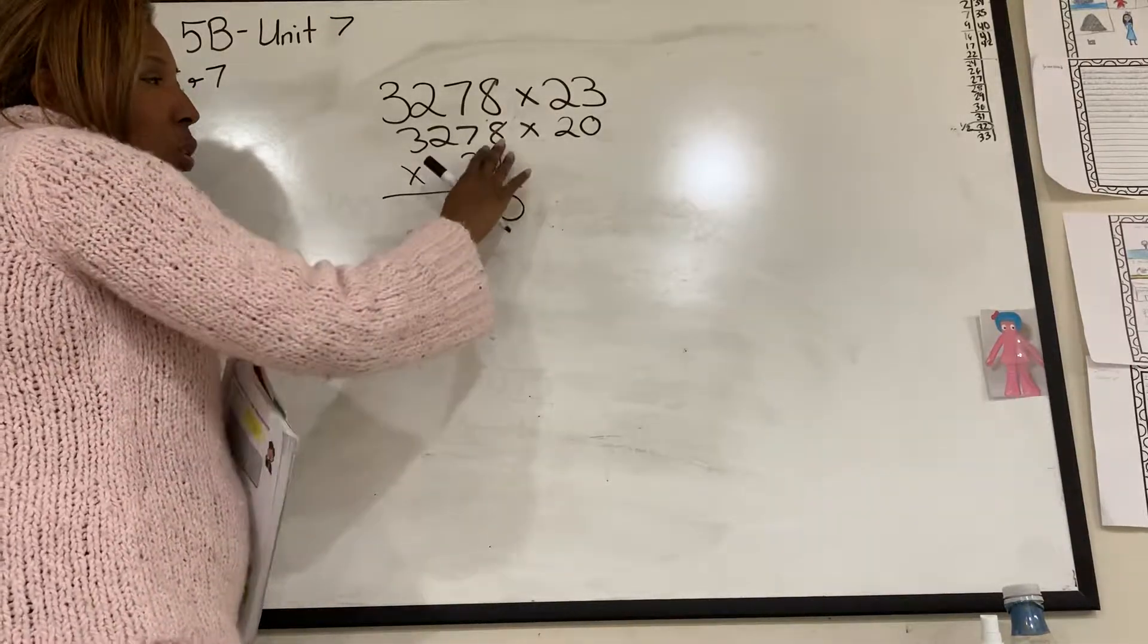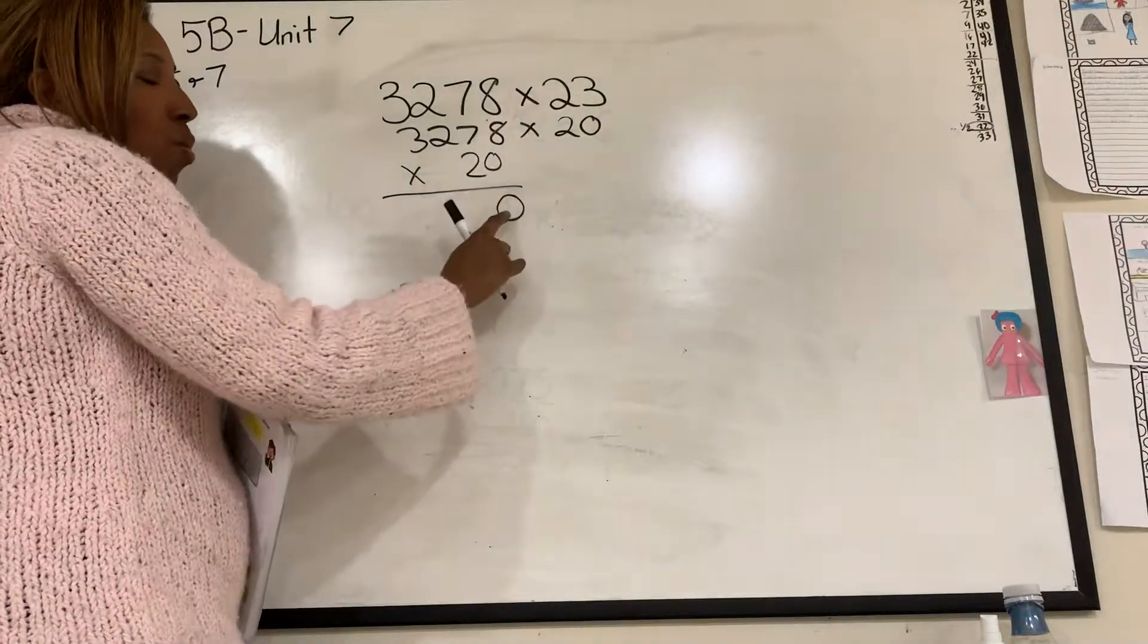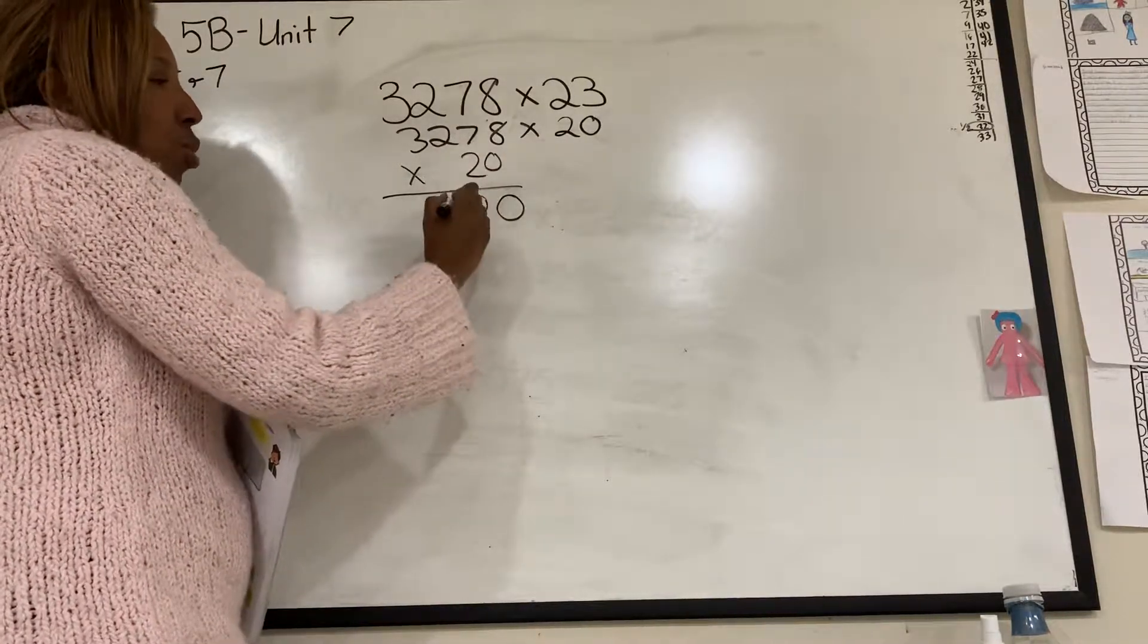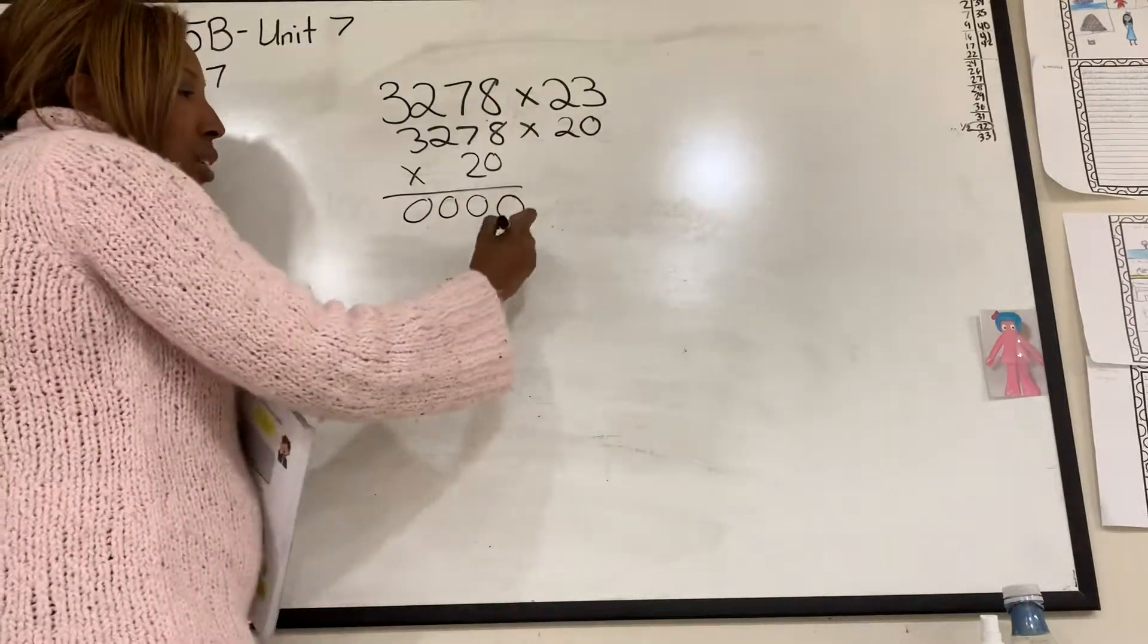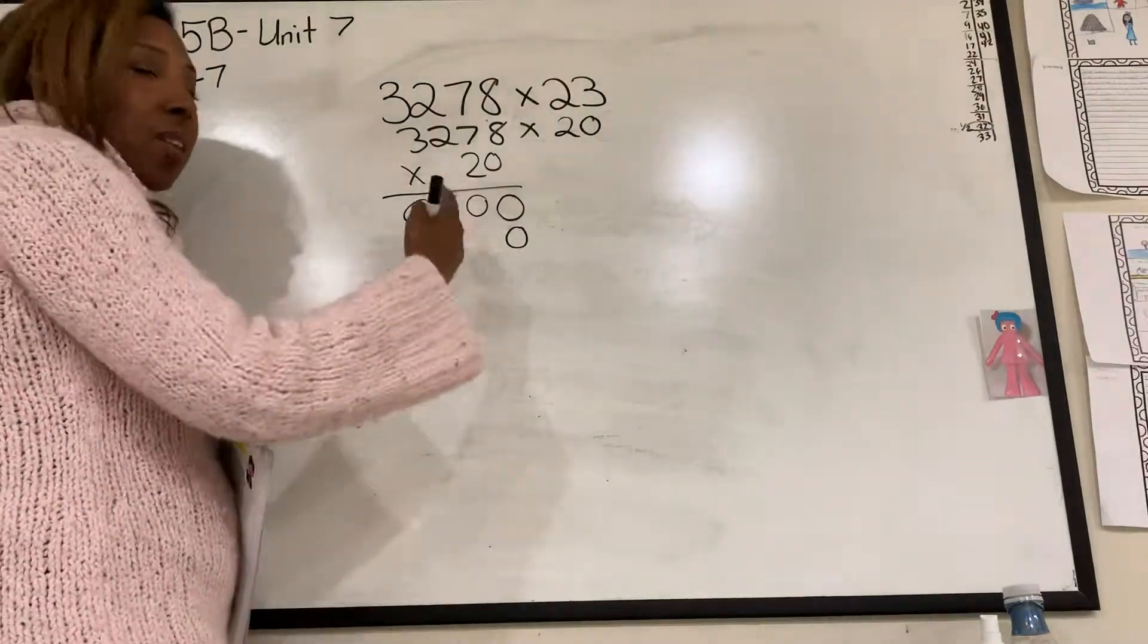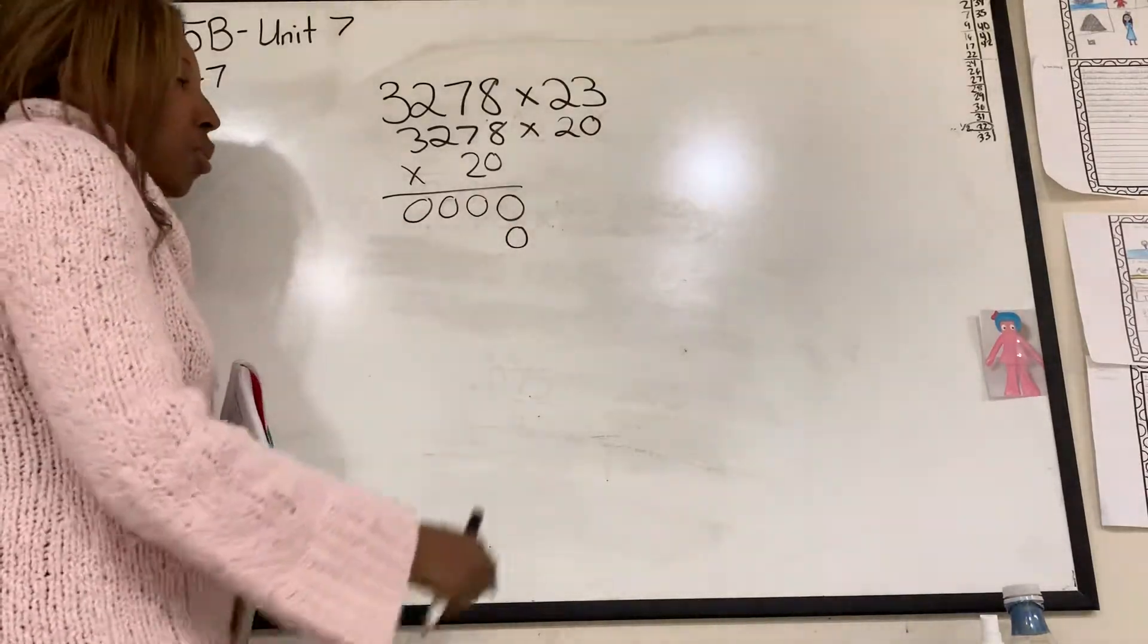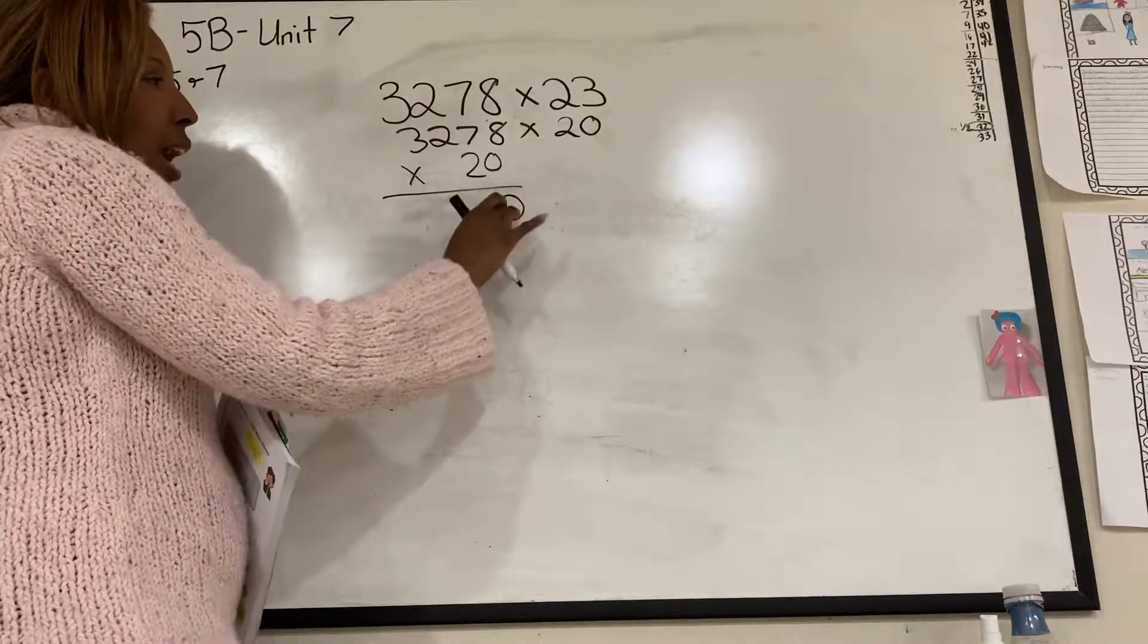And remember that 0 thing? Put the 0 down. It holds the place. You don't have to do anything. The reason I'm doing this is it wastes time to go like this. 0 times 8 is 0. 0 times 7 is 0. 0 times 2 is 0. 0 times 3 is 0. Then you're going to go in the next line and put a 0 there. So the 0 is going to be there regardless. It doesn't make sense for you to waste time drawing 0s when you know it's going to end up being 0. So I'm just putting a 0 down.